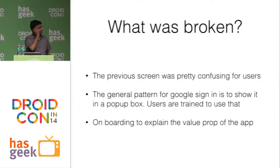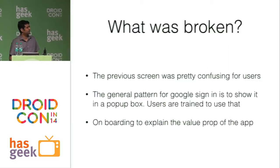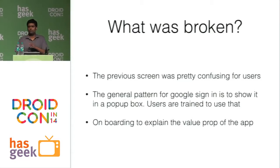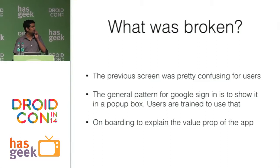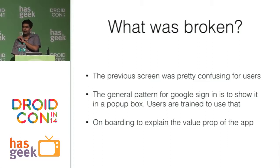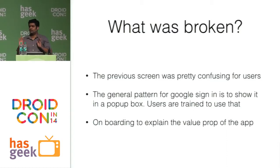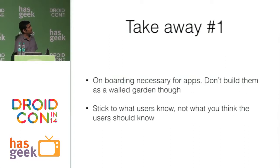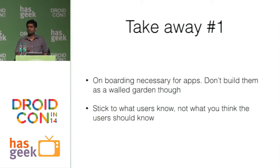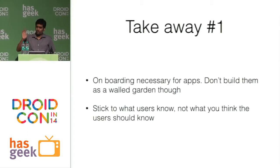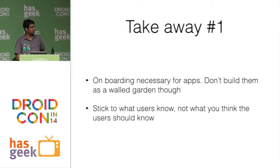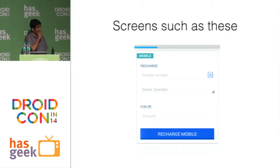Just reiterating: the previous screen was pretty confusing for users. The general pattern for Google sign-in is to show it in a pop-up — users are trained to that. Onboarding explains the app's value proposition. We instrumented it and found people didn't go past the second screen often, but it still helped. The takeaway: onboarding is necessary for utility apps — we saw better conversion — but don't do a walled-garden approach. If people want to log in, allow them to. Stick to what users know.